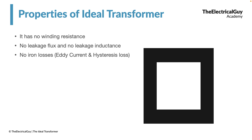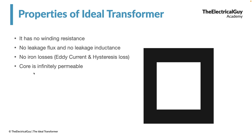One more property related to the core is that the core of an ideal transformer is infinitely permeable, meaning it will not get saturated. A practical core will saturate if flux is increased beyond a point, but that is not the case for the ideal transformer. And since the core is infinitely permeable, we don't even need magnetizing current to produce the flux — the core is capable of producing flux without it.